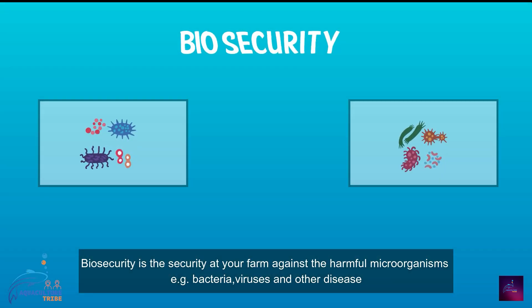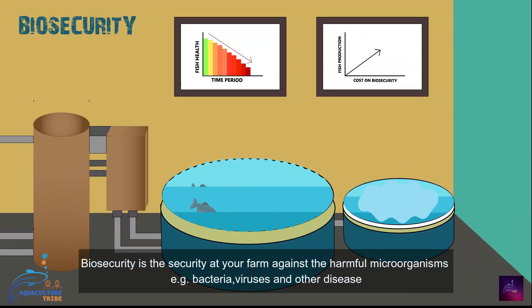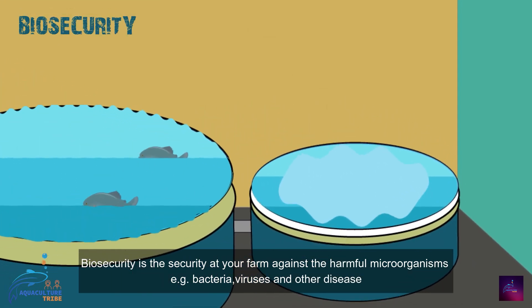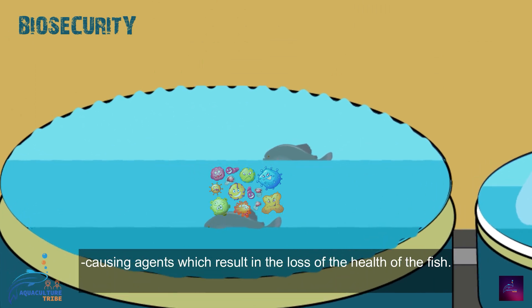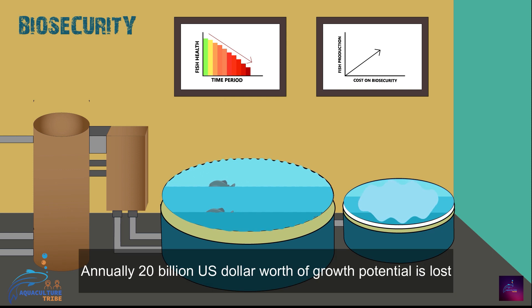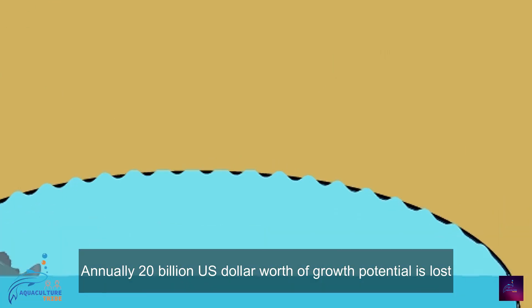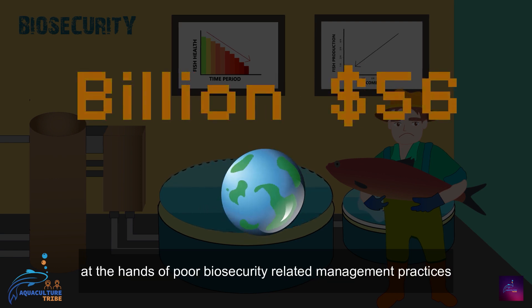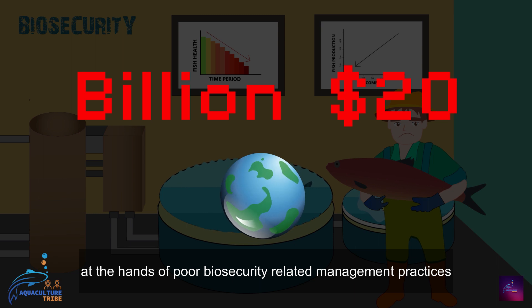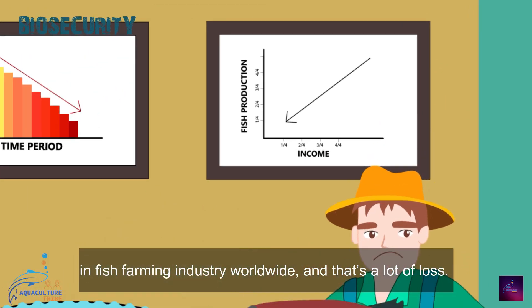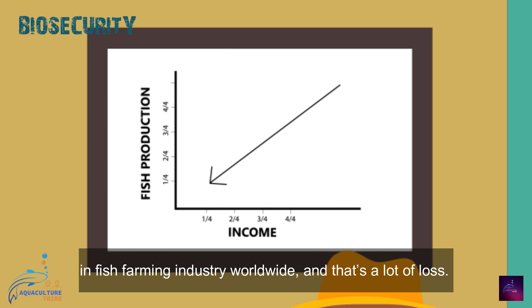Biosecurity is the security at your farm against harmful microorganisms such as bacteria, viruses, and other disease-causing agents, which result in the loss of health of the fish. Annually, 20 billion US dollars worth of growth potential is lost at the hands of poor biosecurity-related management practices in the fish farming industry worldwide — and that's a lot of loss.